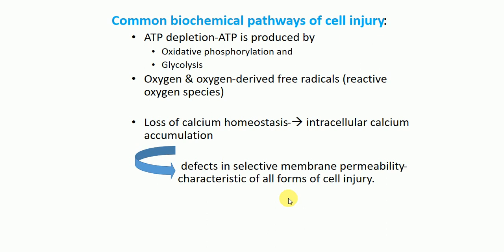Cellular swelling is a condition manifested in all forms of injury. Once cellular swelling occurs, it is associated with the defect in selective membrane permeability, which allows the loss of calcium homeostasis. This means there will be increased intracellular calcium accumulations - an entry of an excessive amount of calcium. The excessive amount of calcium within the cell is toxic to the cell and can cause cell injury.